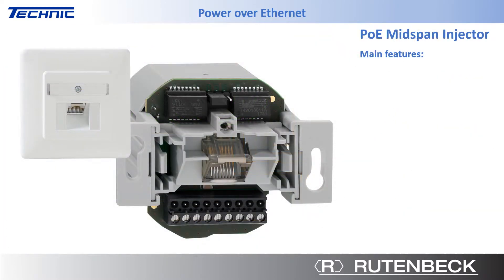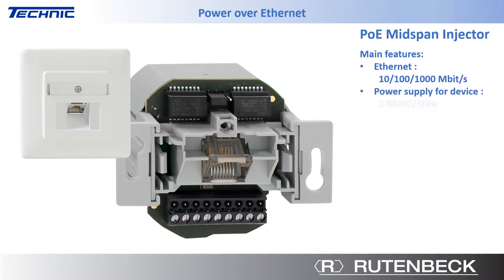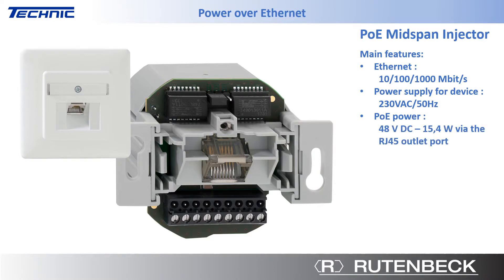The main features of the power over Ethernet injector are: Ethernet speeds of 10 Mbps, 100 Mbps, and 1 Gbps. Power supply for the device: 230 Volt AC, 50 Hz. Available power over Ethernet output: 48 Volt DC and 15.4 Watt via an RJ45 outlet port.